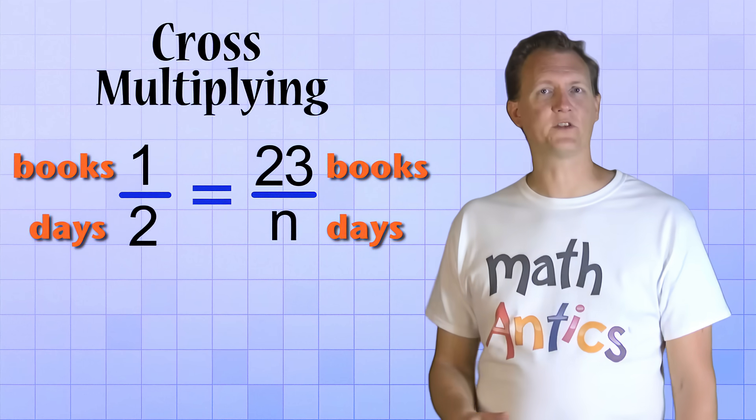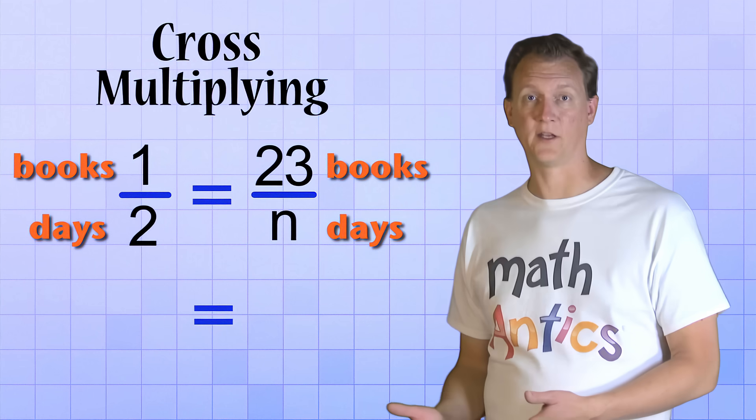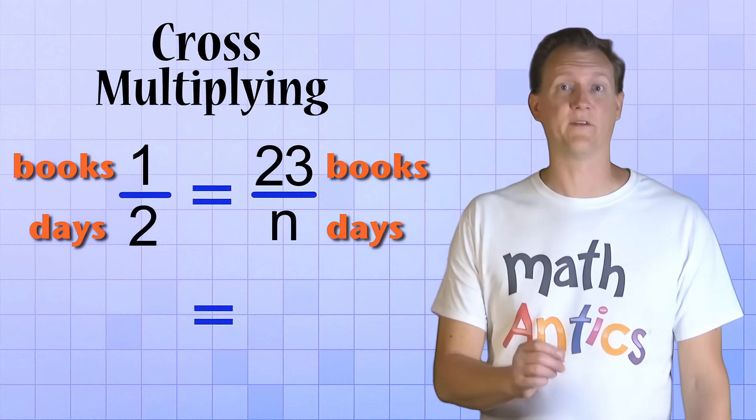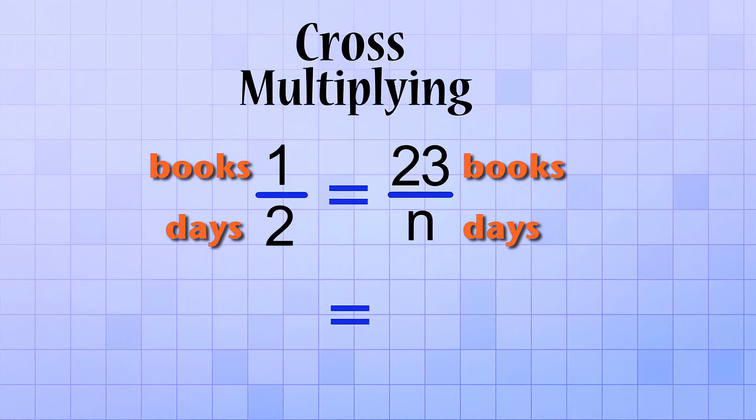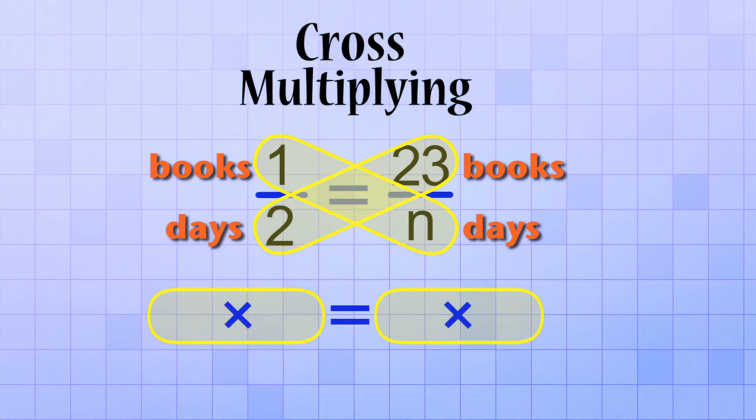To do it, we first start by writing down a new equal sign because cross-multiplying will give us another equation. Next, imagine that a criss-cross shape, like an X, is overlaid on the proportion. This cross-shape tells you which numbers to multiply together on each side of the new equal sign. 1 and N will be multiplied together on this side of the equation and 2 and 23 will be multiplied together on the other side of the equation.